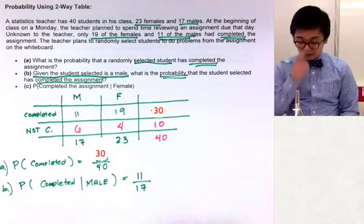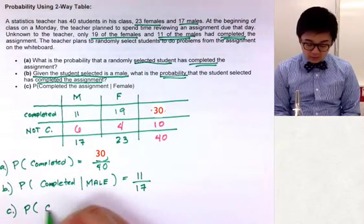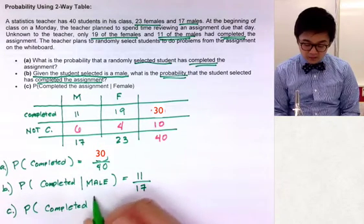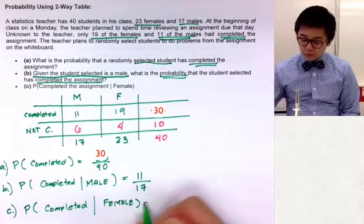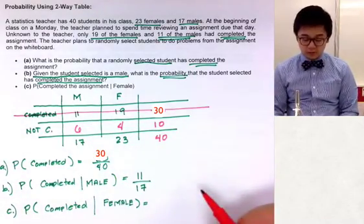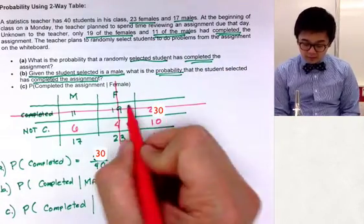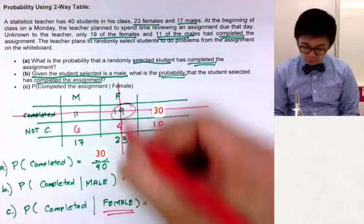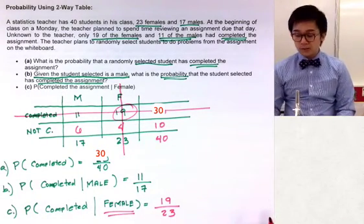For letter C, we find the probability of choosing a student who completed their assignment given that the student is female. Using the two-way table, the intersection of completed assignment and female students is 19, and the total number of females is 23. So the probability is 19 out of 23. That is how we answer probability questions using a two-way table.